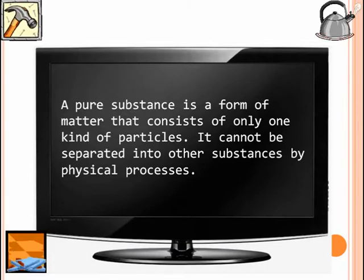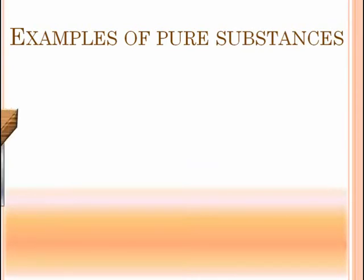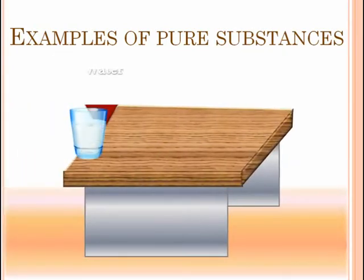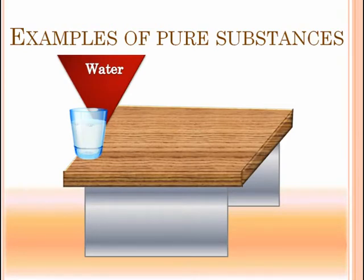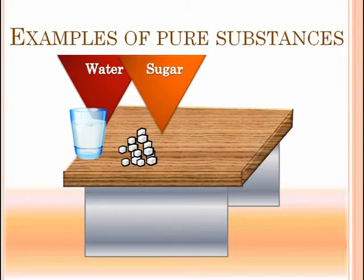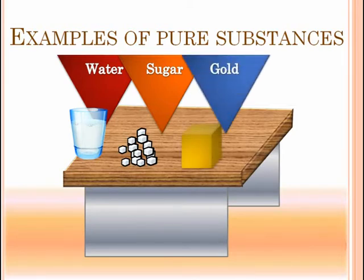Let's take a look at some substances we see in our daily life. Water is a pure substance — it contains the same kind of particles and no matter what physical process water undergoes, it still remains water. Sugar is also pure; all sugar contains the same sugar particles and no matter what you do, you cannot break sugar and get iron or gold or anything else. Similarly, gold itself is a pure substance. All these substances are pure because they contain the same kind of particles and will not give some other substance under any physical process.